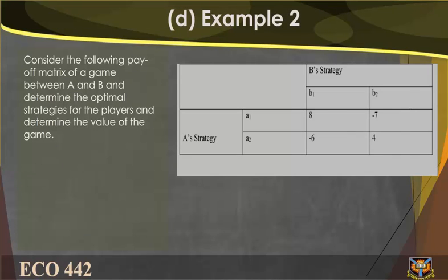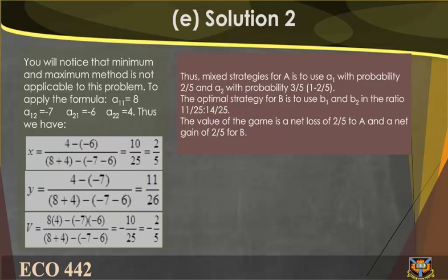Example 2: Consider the following payoff matrix of a game between A and B, determine the optimal strategies for the players and the value of the game. You will notice that the minimax and maximin method is not applicable to this problem. To apply the formula: a11 equals 8, a12 equals minus 7, a21 equals minus 6, a22 equals 4.